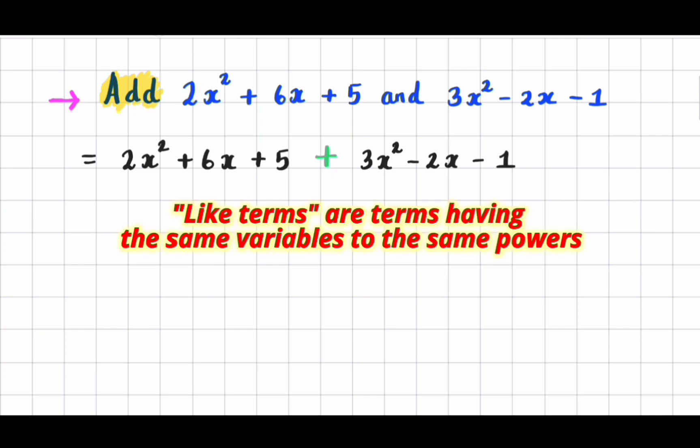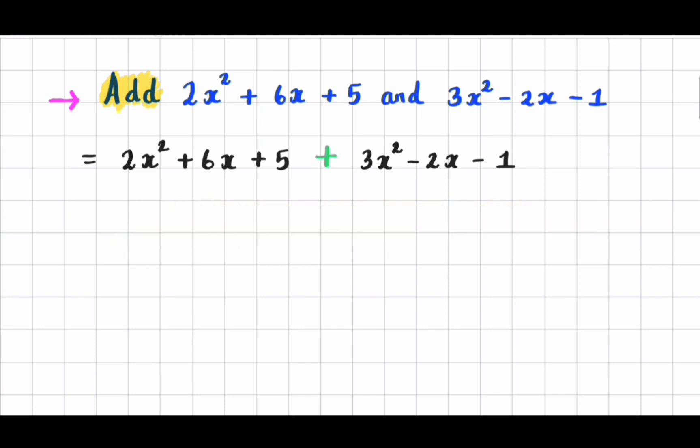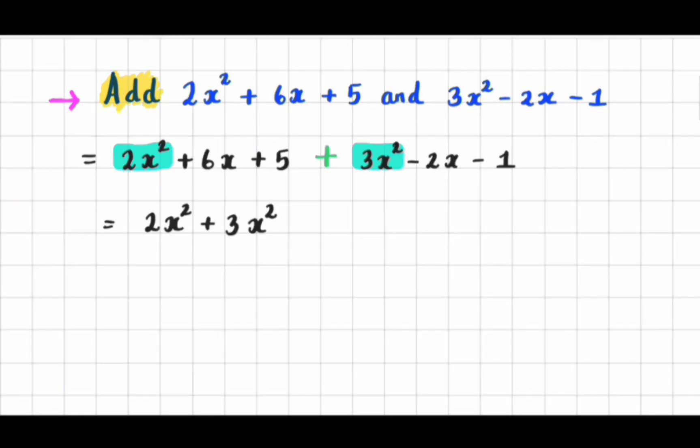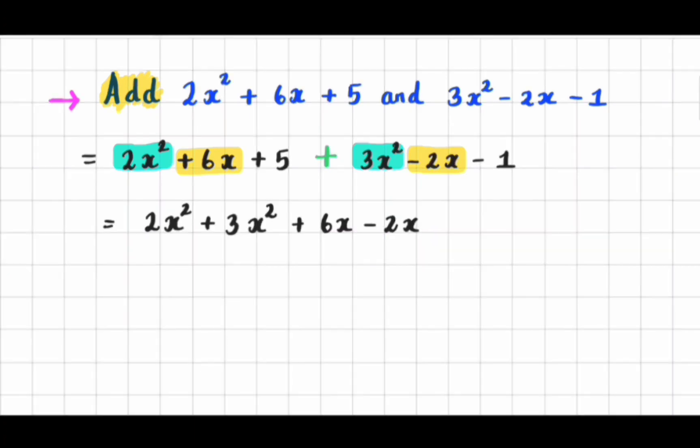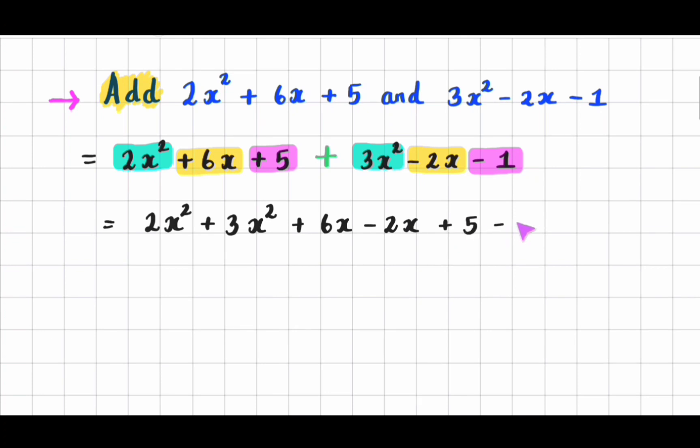We know that like terms are terms having the same variables to the same powers. So, 2x squared plus 3x squared plus 6x minus 2x plus 5 minus 1.